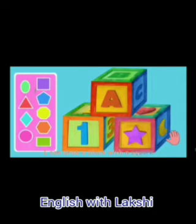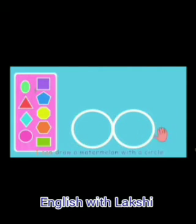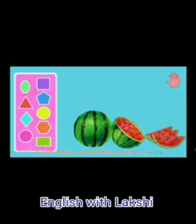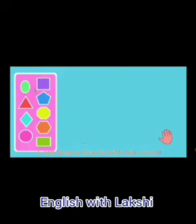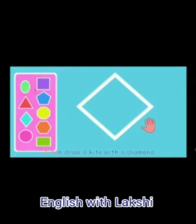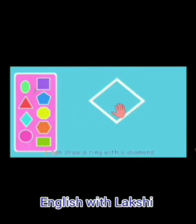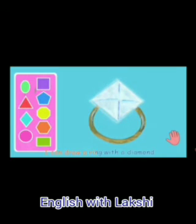I can draw a window with a square. I can draw a sun with a circle. I can draw a bicycle with two circles. I can draw a kite with a diamond. I can draw a ring with a diamond.